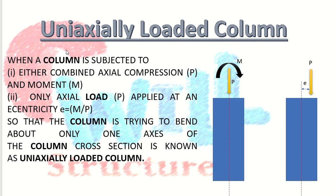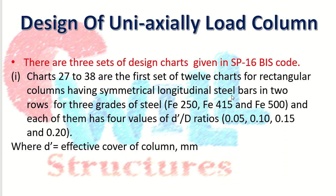First let's understand what a uniaxially loaded column is. As shown in these two diagrams, when a column is subjected to either combined axial compression load and moment, or only an axial load P applied at an eccentricity such that the column tends to bend about only one axis, it is considered a uniaxially loaded column. If the axial load is not passing through the centroidal axis but acts at a distance from it, that is eccentricity, such a column is also designed as a uniaxially loaded column.